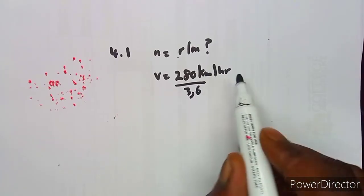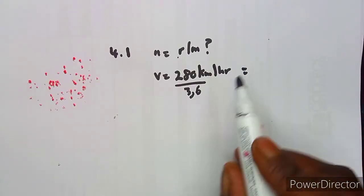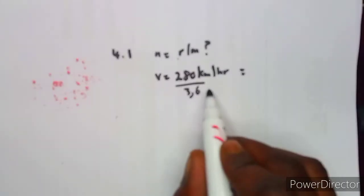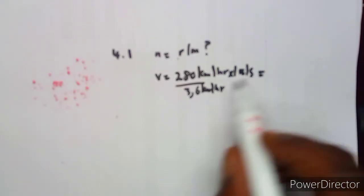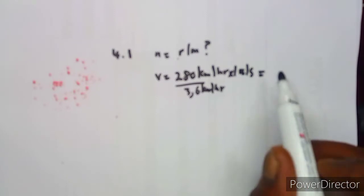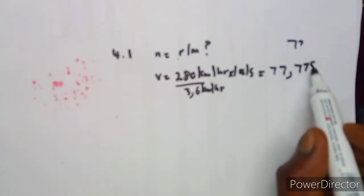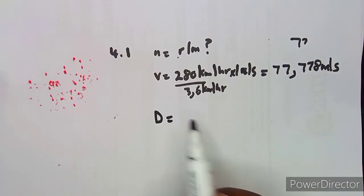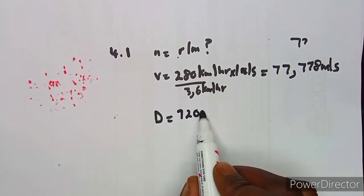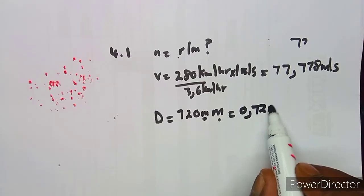To convert 280 km/h to meters per second, divide by 3.6. Remember the relationship: 1 meter per second equals 3.6 kilometers per hour. This gives us 77.778, which we round to 77.778 meters per second. We are also given the diameter of 720 millimeters. To convert to meters, divide by 1000, giving us 0.72 meters.